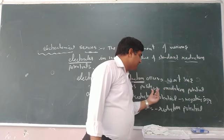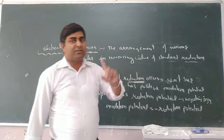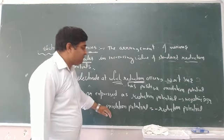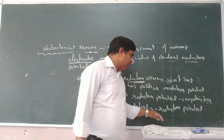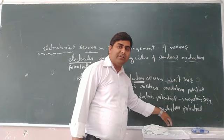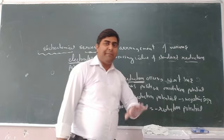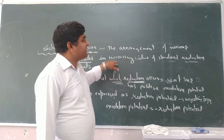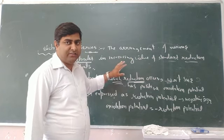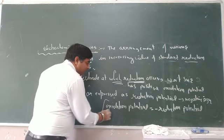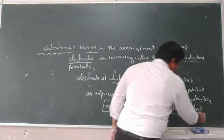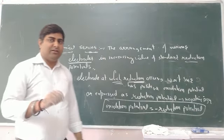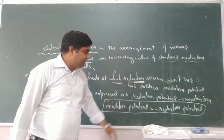Electrodes at which reduction occurs with respect to the standard hydrogen electrode are taken as positive sign. Oxidation potential is positive but reduction potential is negative. Keep in mind that oxidation potential is always equal to the negative of reduction potential — this is a very important concept.